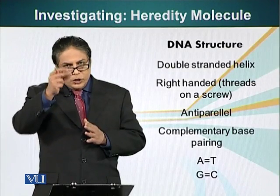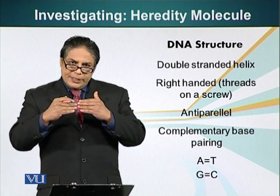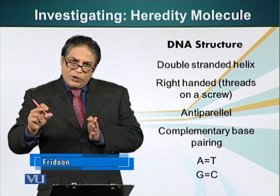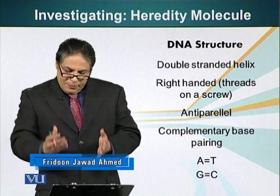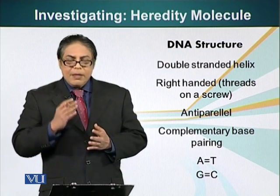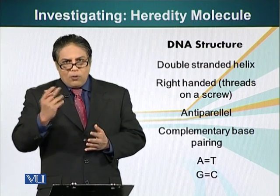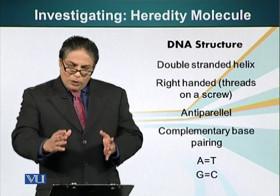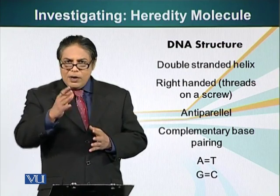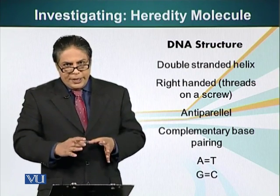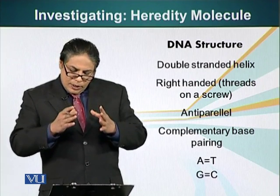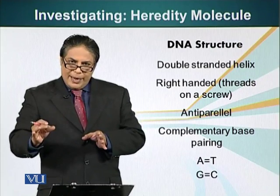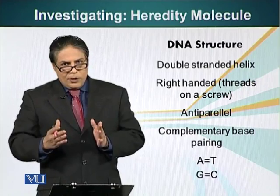DNA is a double-stranded helix with a uniform width. A and T, G and C fit together in an almost perfect way so that both combinations maintain the width of DNA uniformly. They also proposed the right-handed coiling of DNA — similar to the threads around a normal wood screw. They also figured that DNA is antiparallel. Additionally, complementary base pairing — A with T and G with C — allows DNA to have a uniform width. In the next module we will look at the DNA molecule in more detail.